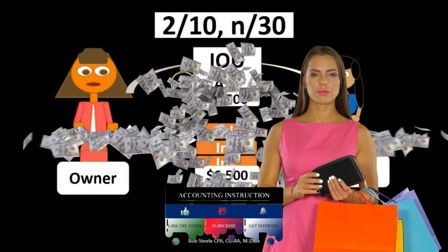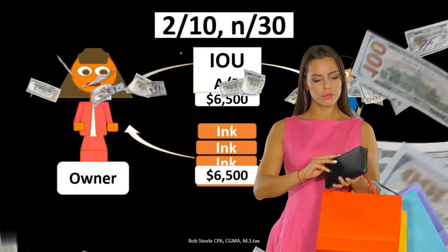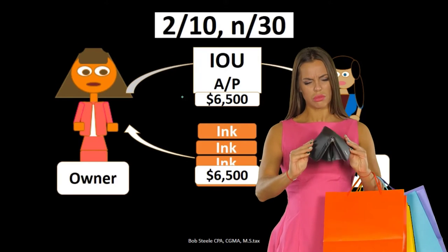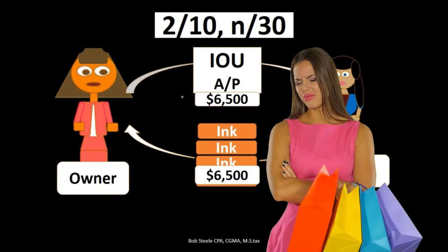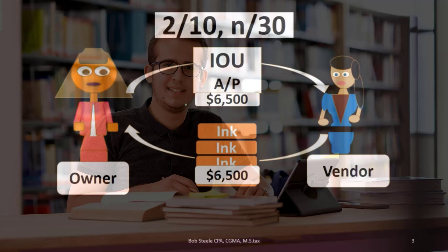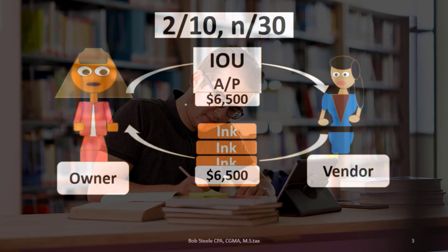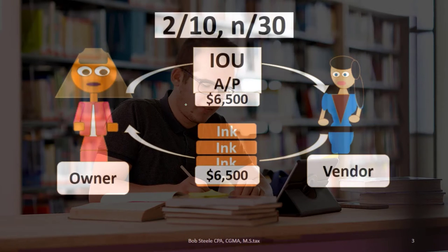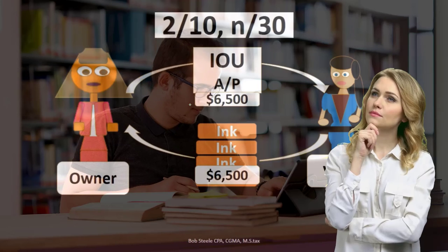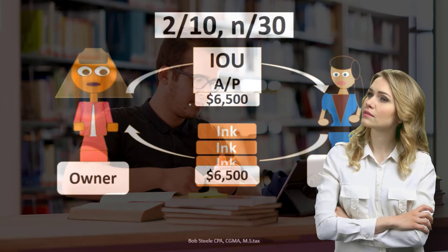If, however, we pay within 10 days, we have to account for that 2% discount. The cash we pay will not be $6,500 — it'll be $6,500 less the 2% discount. We remove the full $6,500 from accounts payable, and account for the discount by decreasing the inventory asset by that discount amount, since the asset was put on the books at $6,500 but really needs to be recorded at $6,500 less the discount.